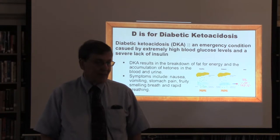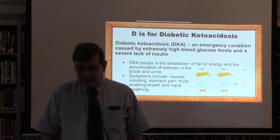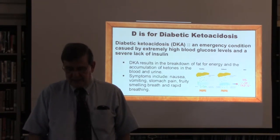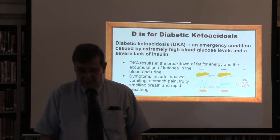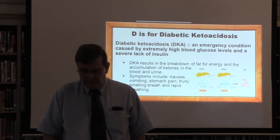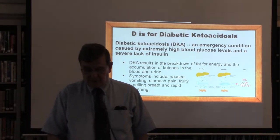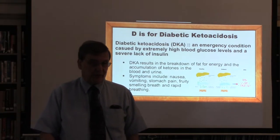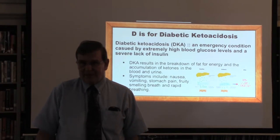D is for diabetic ketoacidosis, or DKA. This is an emergency medical condition where extremely high blood glucose levels, along with a severe lack of insulin, results in a breakdown of fat for energy and an accumulation of ketones in the blood or urine. Signs of diabetic ketoacidosis can include nausea and vomiting, stomach pain, a fruity breath odor, and rapid breathing. Regular monitoring of blood glucose levels is a big part of diabetes management. Don't hesitate to talk to your pharmacist or doctor about checking your blood glucose levels. When your blood glucose is high, there are urine tests you can do for ketones, and if you have ketones in your urine, that could be a medical emergency.